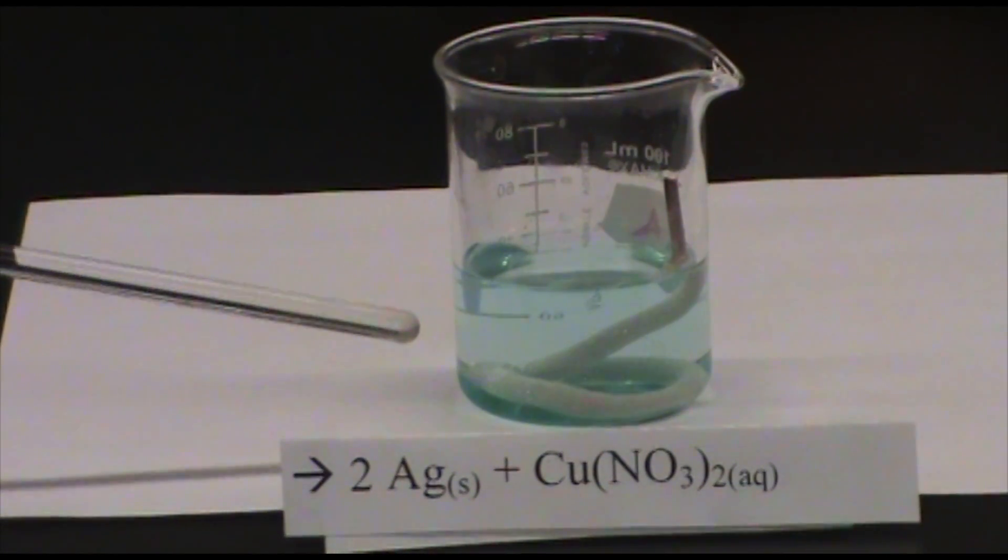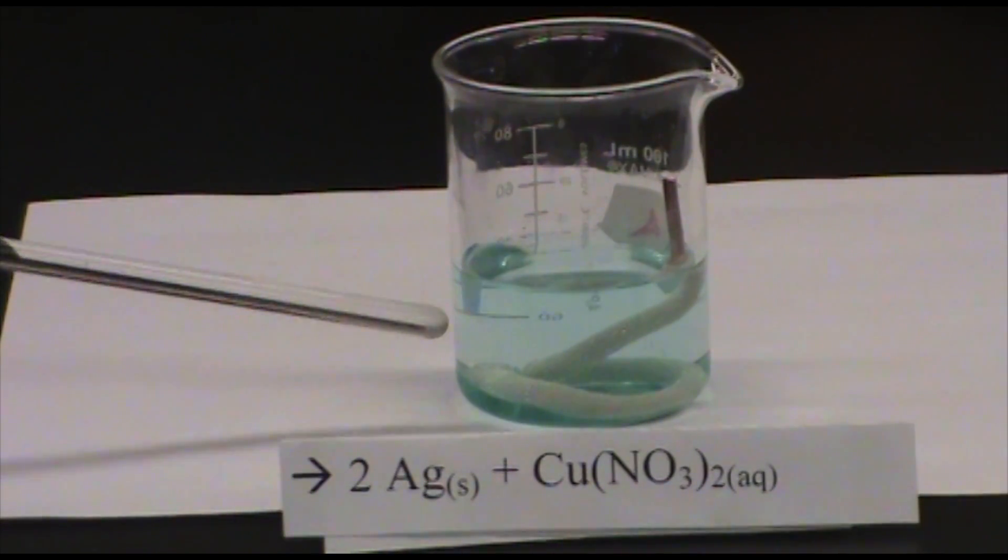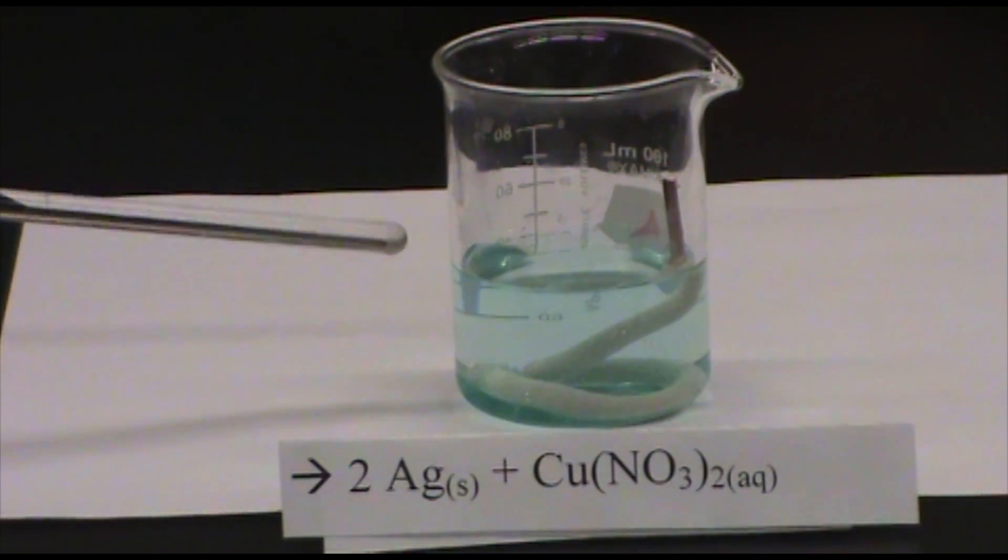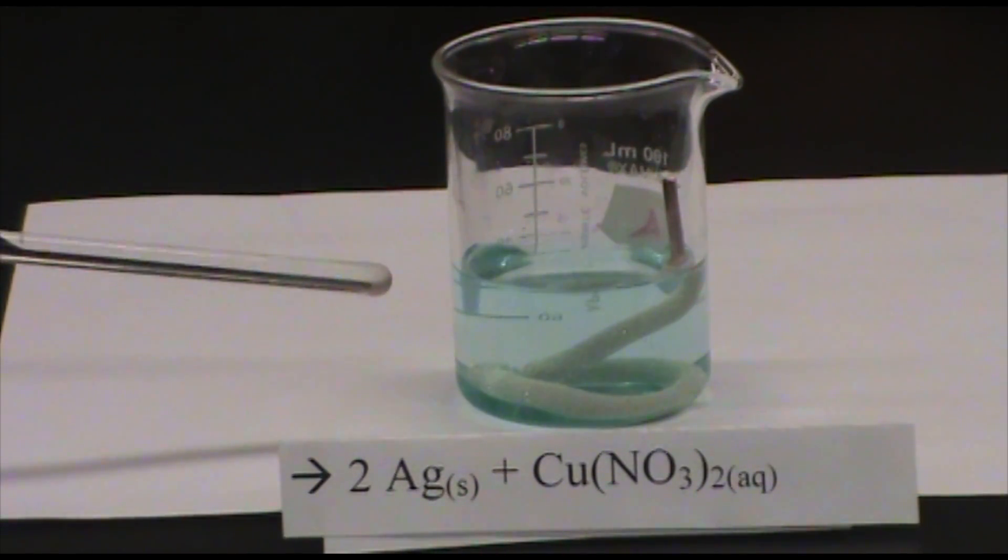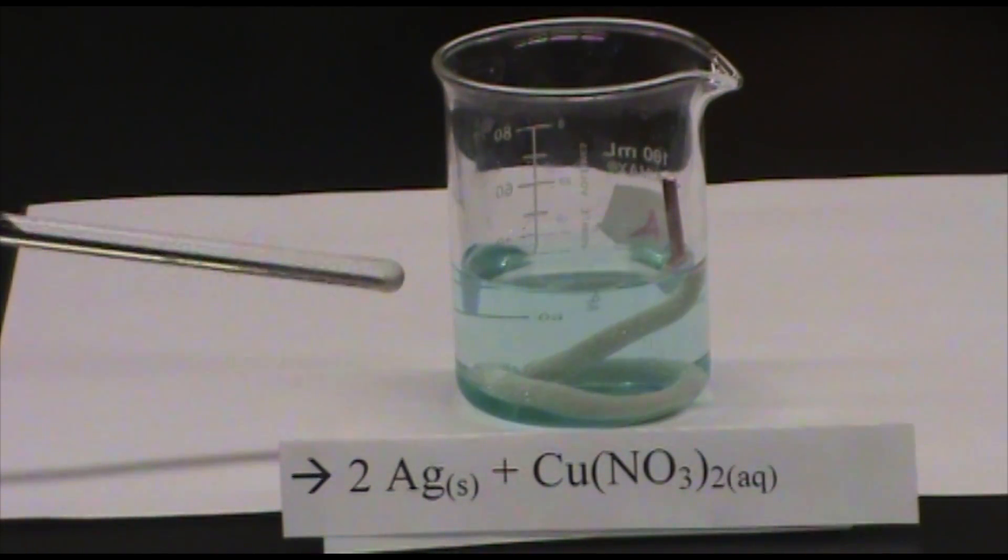As you can see, the silver is precipitated out and is collecting on the copper wire. At the same time, copper is replacing silver in solution as a cation with a plus two charge. This cation has a characteristic color of blue in solution.